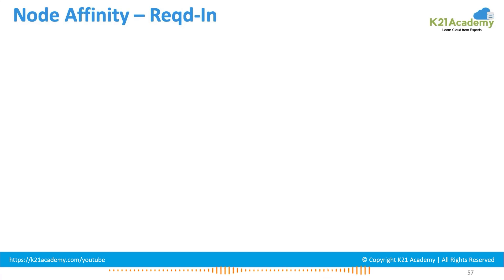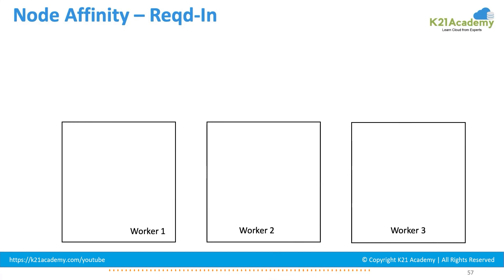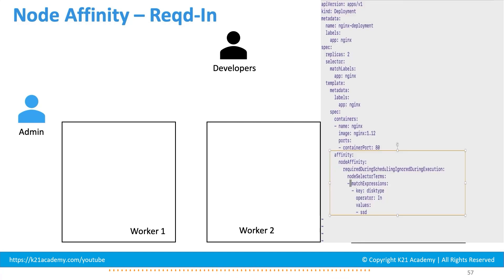We will see all four combinations. Let's first look at node affinity with the required type of condition. You have multiple worker nodes and an admin managing labels in the cluster. As a developer you write a deployment file specifying a constraint for your pod's placement. This condition applies to the pod — all containers belonging to a pod must abide by it. The condition is not inside the container section; it belongs to the pod.